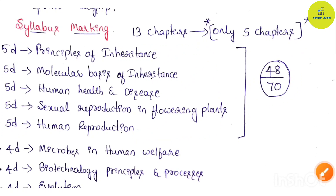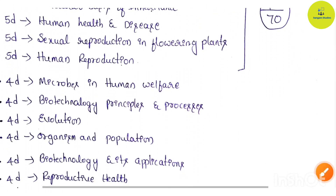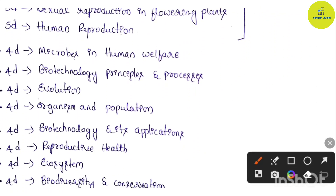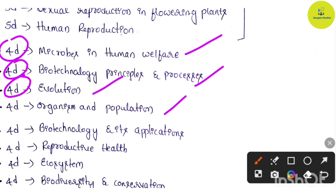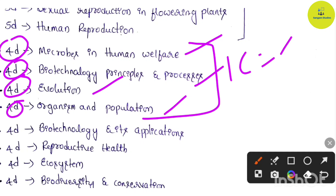The next 4 important chapters are: Microbes in Human Welfare, Biotechnology Principles and Processes, Evolution, and Organism and Population. Give 4 days each to complete these 4 chapters.